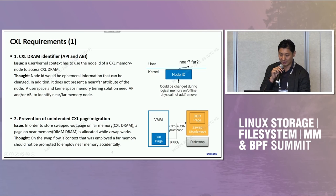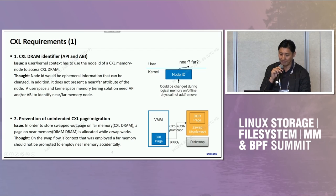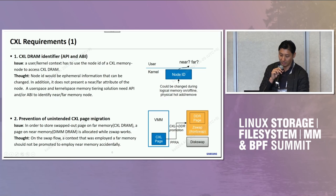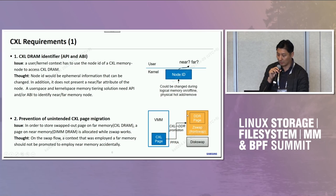The second requirement is the need to prevent unintended CXL page migration. The issue is what happens during zswap operations. In order to store swapped-out pages on far memory, the original content was in CXL pages. But the zswap operation used DDR pages — we consider this a kind of unintended promotion because the CXL page is changed into a DDR page. On the swap operation, the context that was using far memory, the CXL page, should not be unintentionally permitted to use near memory, DDR memory. We thought this is a kind of unintended promotion from CXL to DDR.